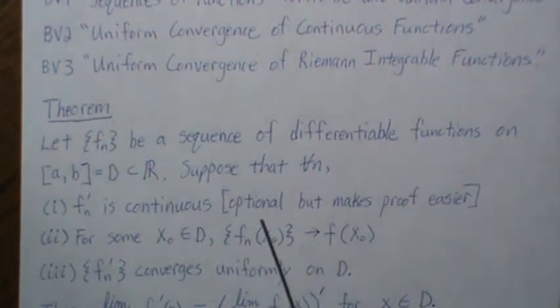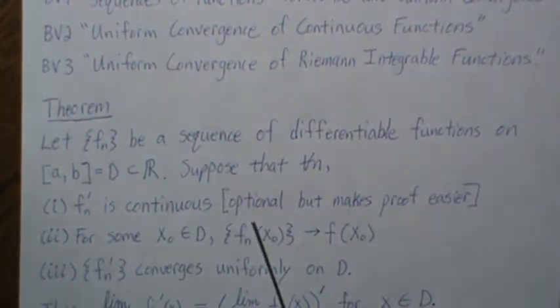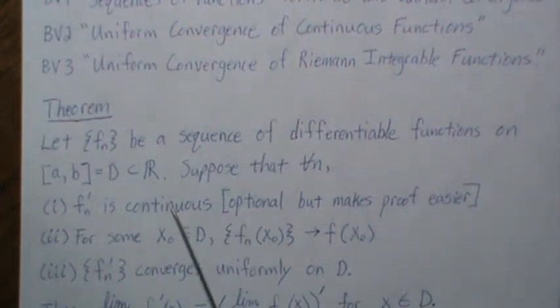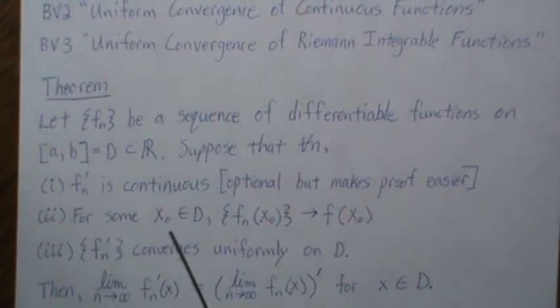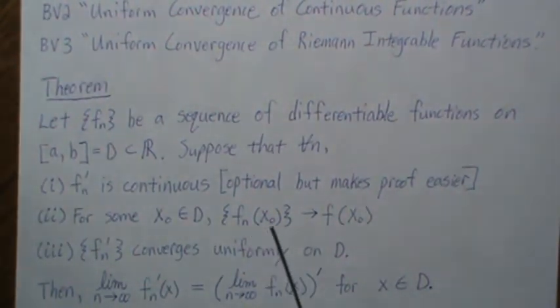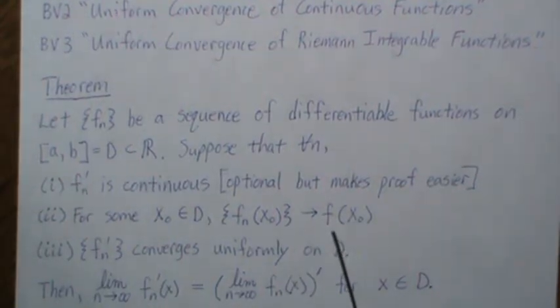Now technically, this is an optional statement, but it sure does make the proof a lot easier. And maybe I'll prove it later without this. But for this, we're going to assume it. For some x_0 ∈ D, f_n at that point, we have pointwise convergence to f.